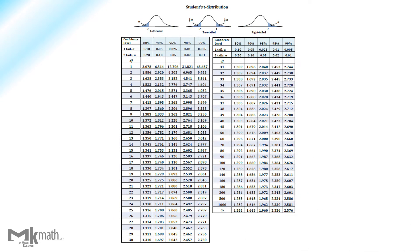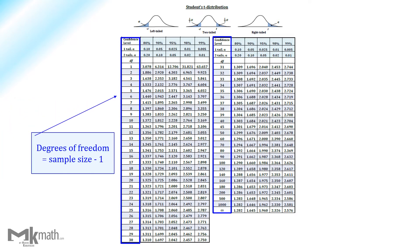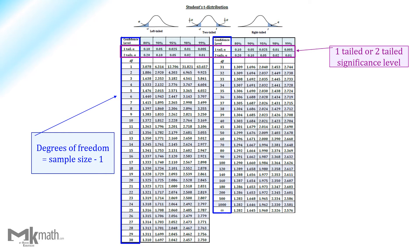Here is the t-table we use. The first column shows the degrees of freedom, which we can find by subtracting one from the sample size. The second and third rows show either one-tailed or two-tailed significance levels. The intersections of those give t-scores.